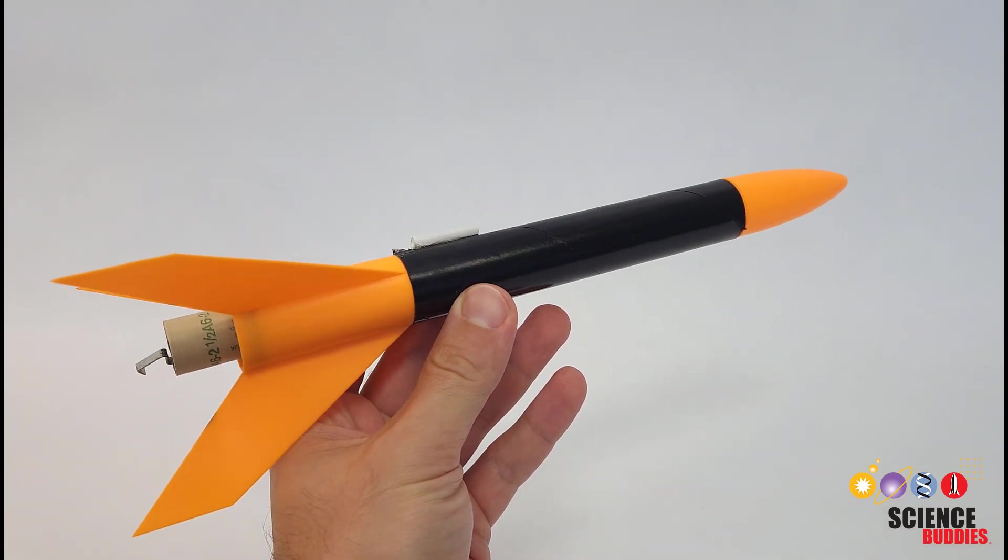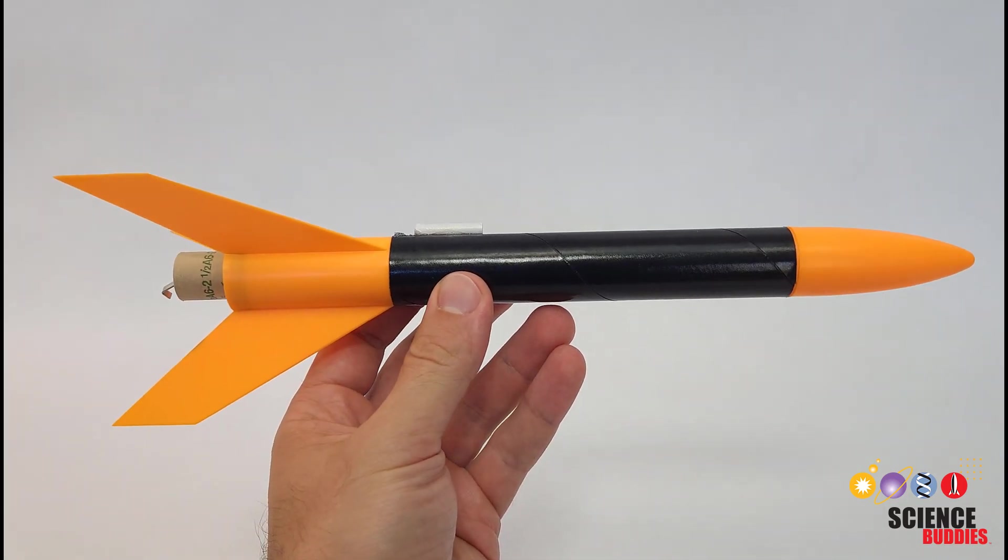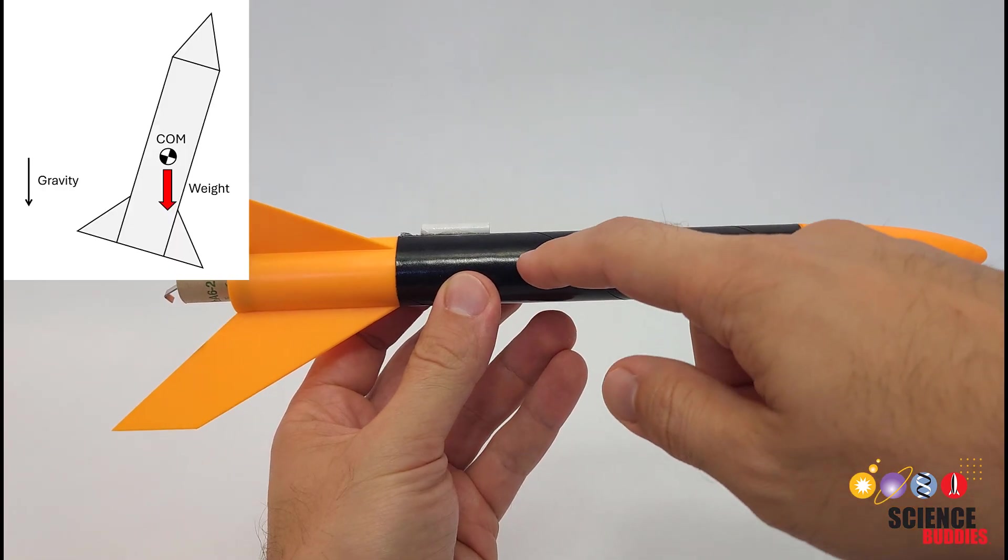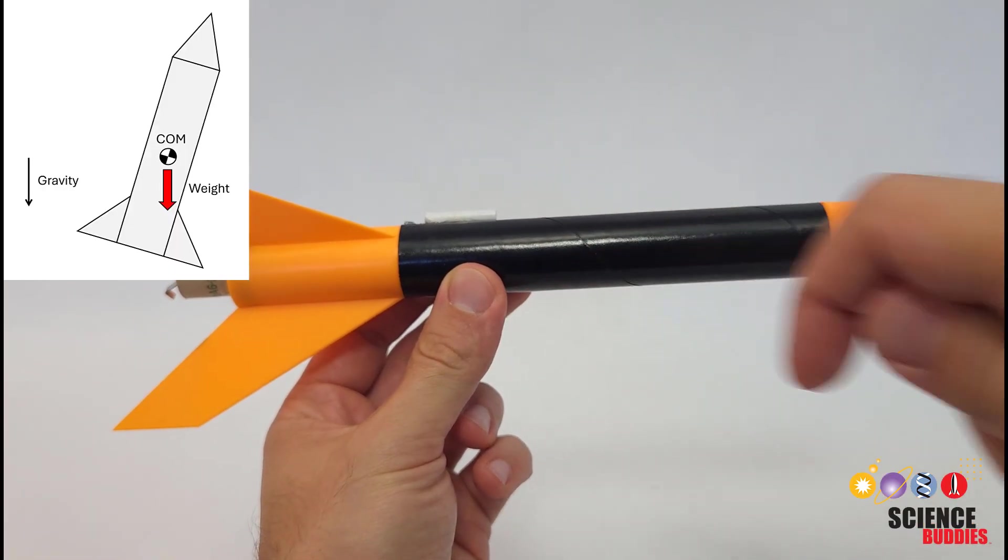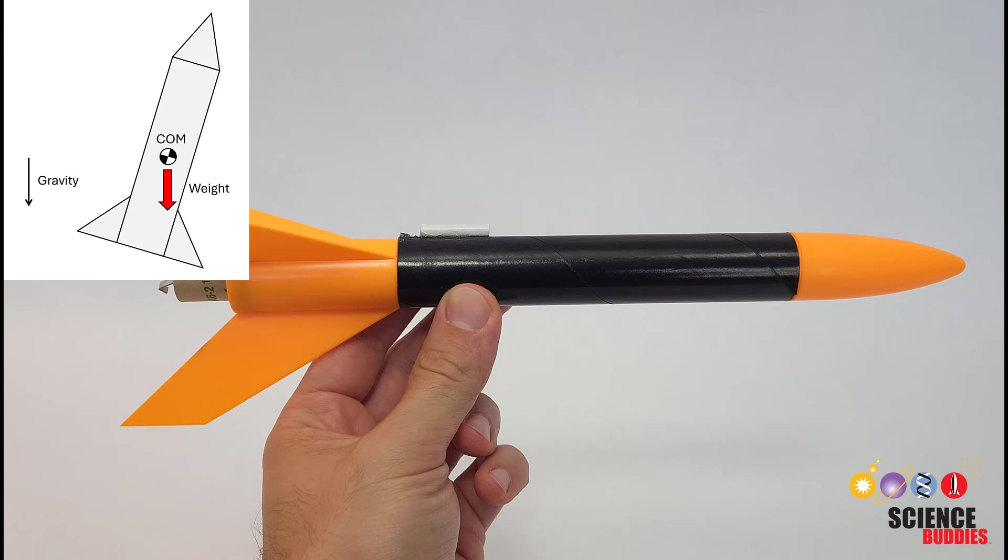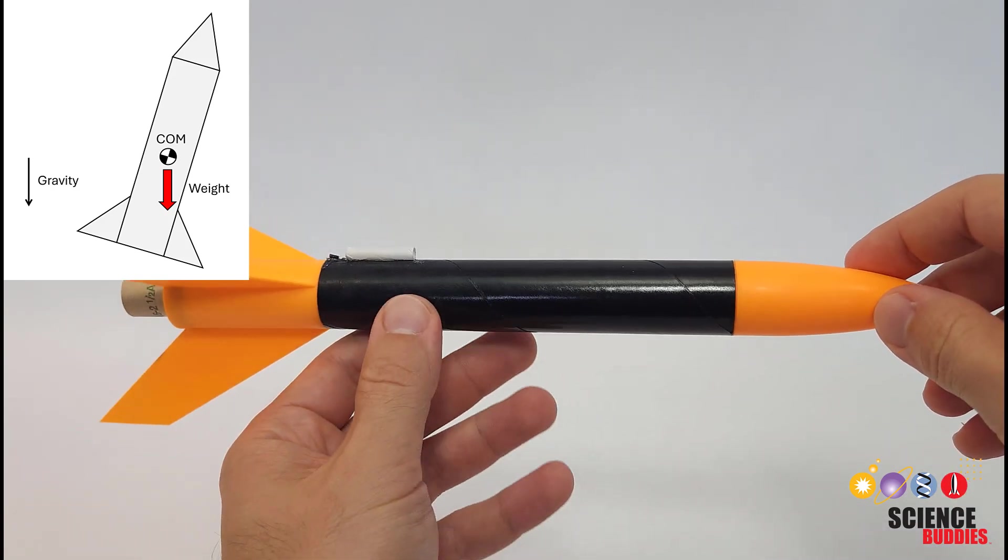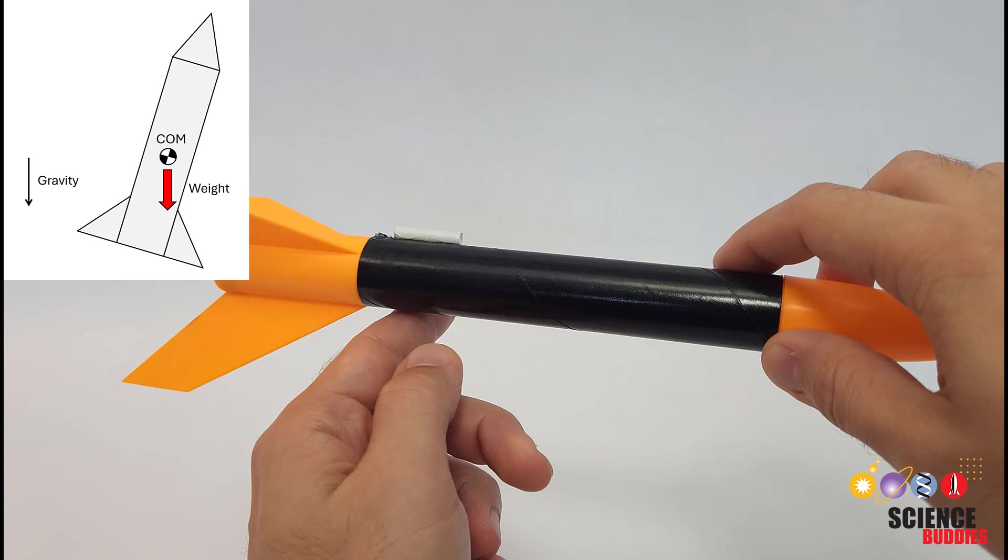However, when using physics to predict how an object will move, we can treat gravity like it's a point force, a single force that acts on a single point on the object. This point, called the center of mass, is the average location of all of the rocket's mass.